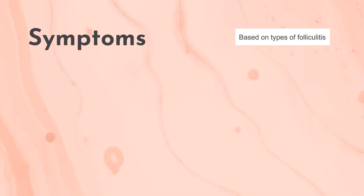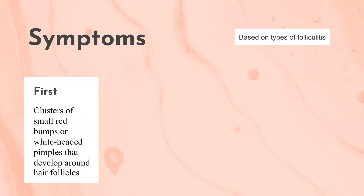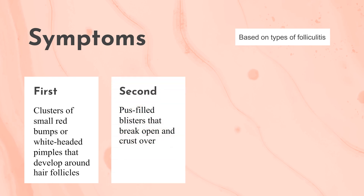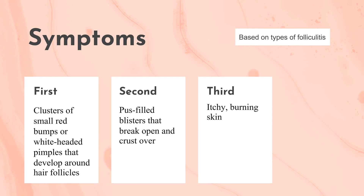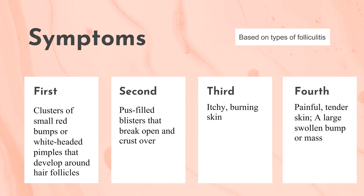Based on the exact type of folliculitis, you may have these symptoms: first, a cluster of small red bumps or white-headed pimples that develop around hair follicles; second, pus-filled blisters that break open and crust over; itchy and burning skin; painful or tender skin; or a large swollen bump or mass on your skin.